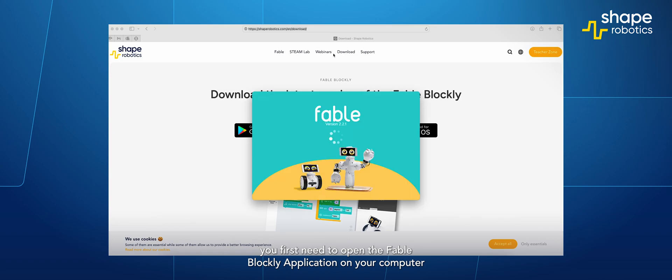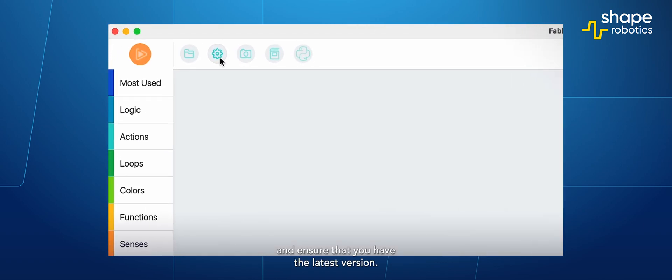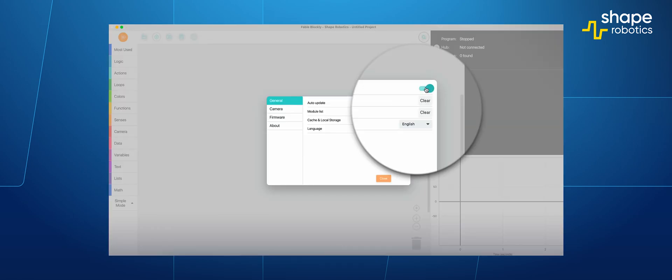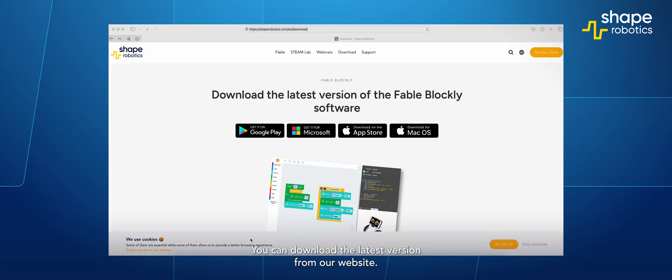To update the firmware for your FableSpin module, you first need to open the Fable Blockly application on your computer and ensure that you have the latest version. You can download the latest version from our website.